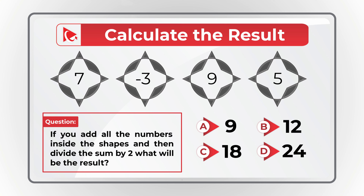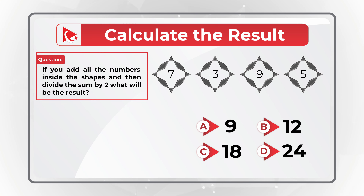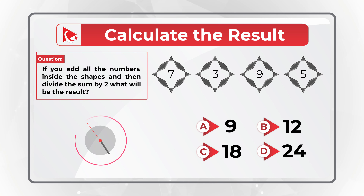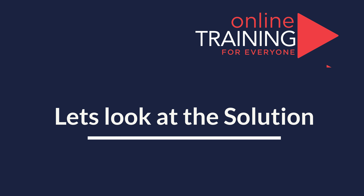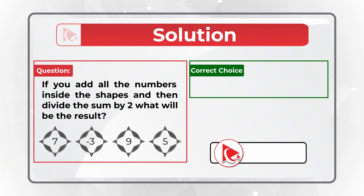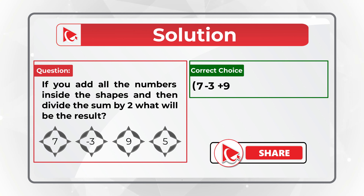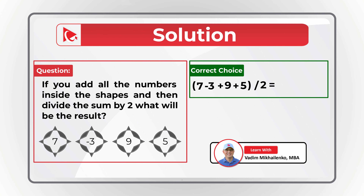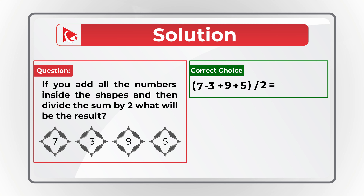Give yourself 10 to 20 seconds by pausing the video to do the calculations. The math is pretty straightforward: you calculate (7 − 3 + 9 + 5) and then divide the sum by 2. The result is 18 divided by 2, which equals 9.